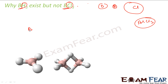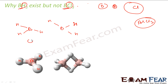So BH3 forms a dimer structure similar to AlCl3. If you draw BH3: boron has 6 electrons (2+2+2), and both boron atoms are sad. So they form a bridging bond, and now both become happy with 8 electrons. This gives the dimer structure, where the white atoms are hydrogen and the central atoms are boron.